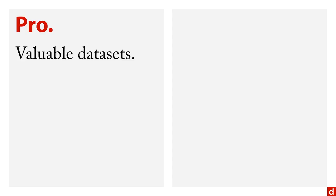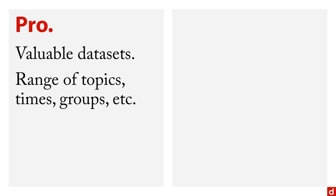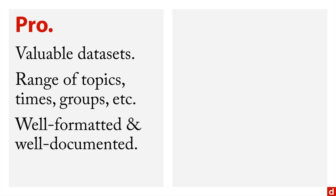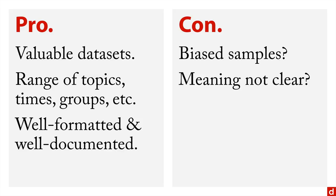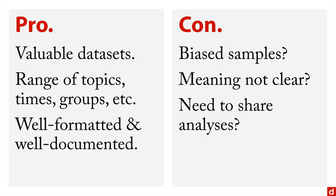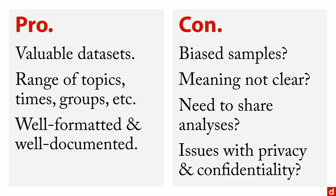There are some pros and cons to using open data. First, you can get very valuable datasets that may have cost millions of dollars to gather and process, covering a wide range of topics, time periods, and groups of people. Often the data is very well formatted and well documented. However, there are a few cons: sometimes there are biased samples — for instance, you only get people who have internet access, which doesn't represent everyone. Sometimes the meaning of the data is not clear. A potential problem is that you may need to share your analyses, and if you're doing proprietary research, it will have to be open research instead, which can create issues with some clients. Finally, there are issues with privacy and confidentiality — in public data, identifiers are usually absent, so you'll have to work at a larger aggregate level of measurement.